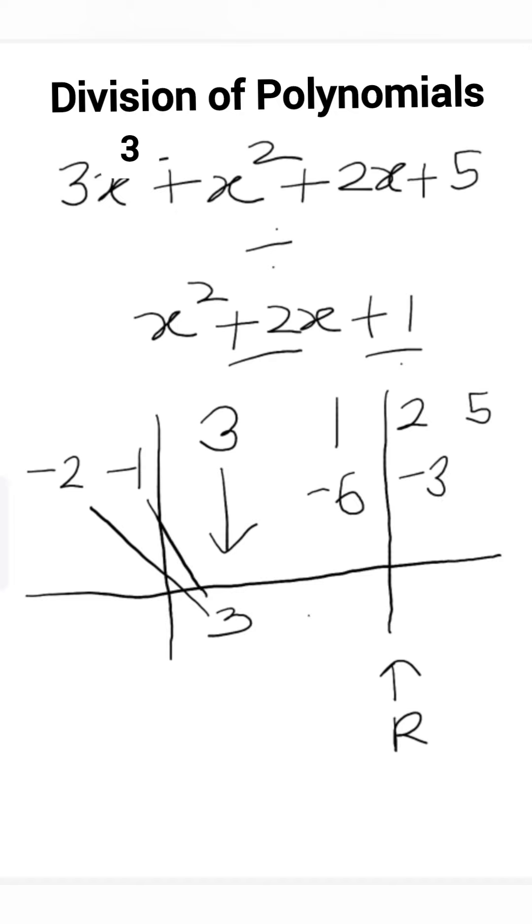Now take 1 minus 6 which is equal to minus 5. Multiply this minus 5 with minus 2 and minus 1. So we will get 10 and plus 5.